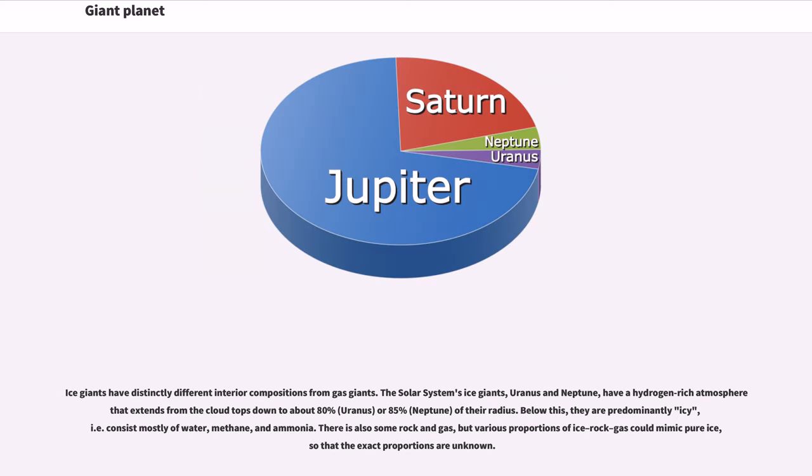Ice giants have distinctly different interior compositions from gas giants. The solar system's ice giants, Uranus and Neptune, have a hydrogen-rich atmosphere that extends from the cloud tops down to about 80 percent (Uranus) or 85 percent (Neptune) of their radius. Below this, they are predominantly icy, consisting mostly of water, methane, and ammonia.